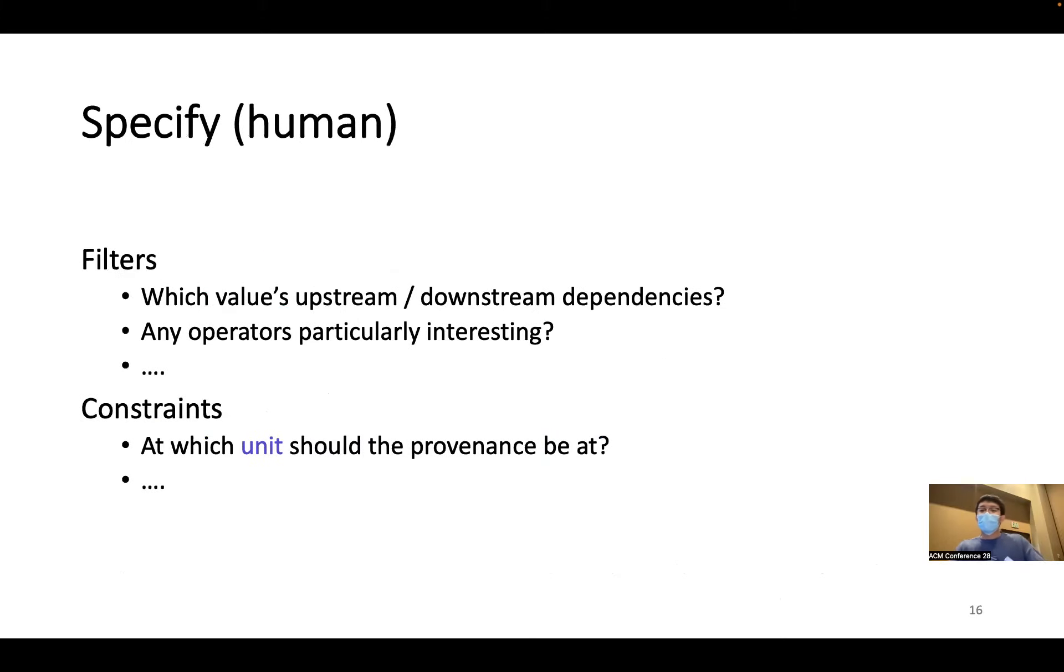The second step is to allow humans to specify their detailed provenance need for their own case, because remember, everyone might have a different question to ask. And the specification generally serves two roles. It can be filters that determine what values including the provenance, somewhat similar to a selection predicate in databases. So examples include which values upstream or downstream dependencies to include, or if there is any operators particularly interesting.